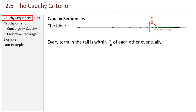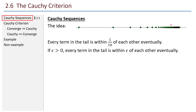But for Cauchy sequences, I might not know what that limit is. One thing I can say from this picture is that after some point, all the terms in the tail are within a certain length of each other — for example, maybe 1 tenth. Given epsilon, all the terms in my tail are within epsilon of each other. This is the idea of Cauchy sequences: can I guarantee that all the terms in the tail, if I go out far enough, will be within a certain distance of each other?